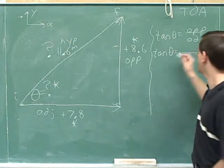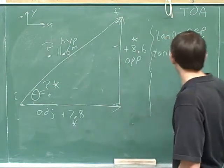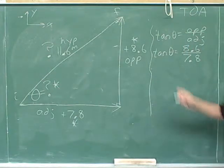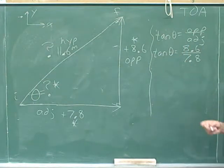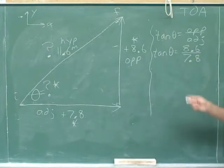The length of the opposite side is 8.6, and the length of the adjacent side is 7.8. Now that we're working with trig functions, we're thinking about geometry and lengths, so we're not going to indicate signs because lengths are always positive.